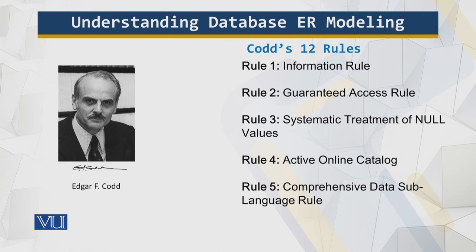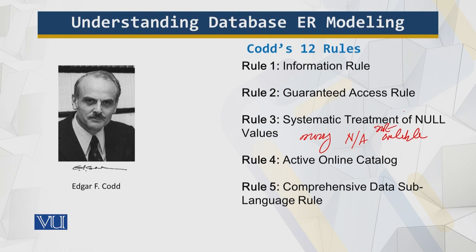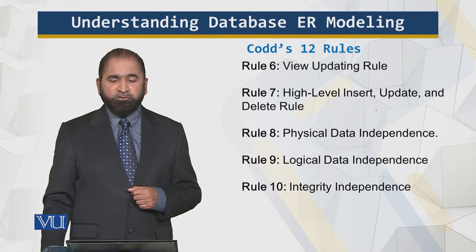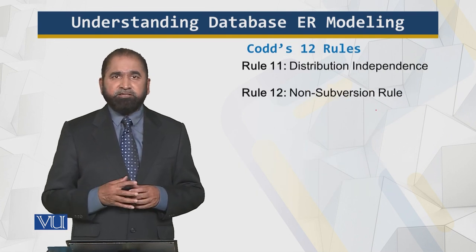Systematic treatment of null: this is very interesting because if data is missing, not available, or not applicable, you cannot leave it empty or put a zero there — it is marked as missing, not applicable, or not available. Active online catalog: the same way we have data stored in tables, we also have data about the tables stored as tables. Comprehensive data sub-language rule: we have a language, which is SQL. These are 12 rules and we cannot go over all of them in detail in this module, but I promise to go through them in detail in the appropriate module.